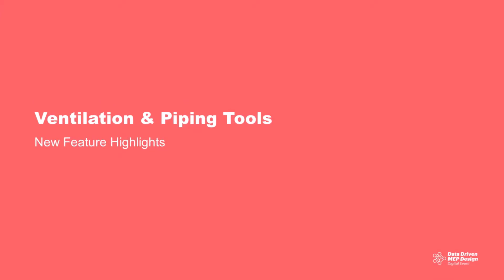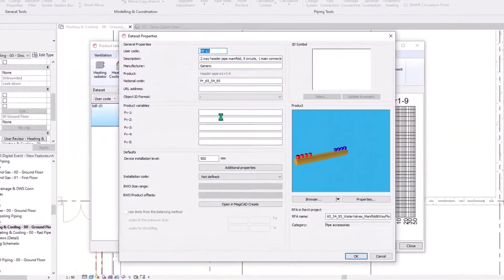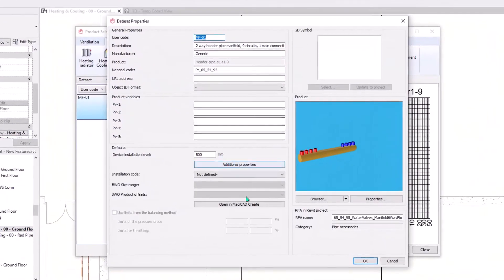On to ventilation and piping tools — we're going to look at all the new features under this category. The first one is the manifold, or header as it's called in the UK, configurator. What it allows you to do is connect your own systems to your own bespoke, custom manifolds or headers.